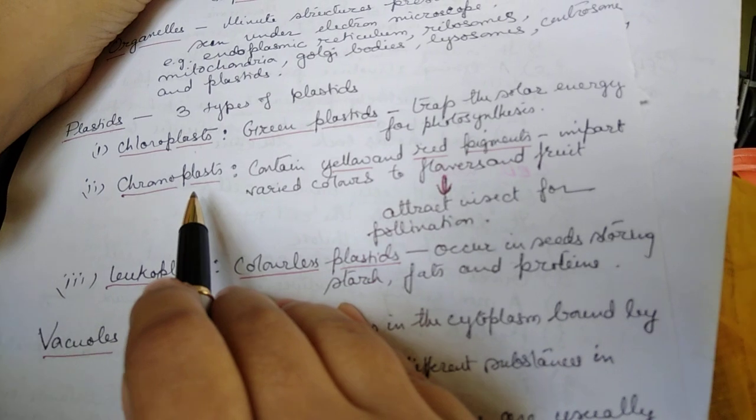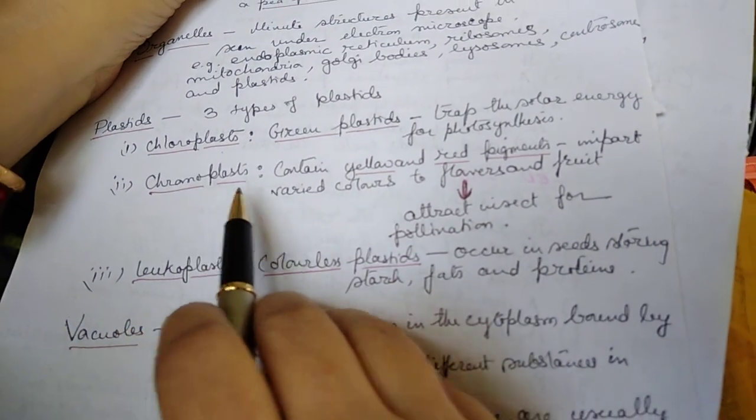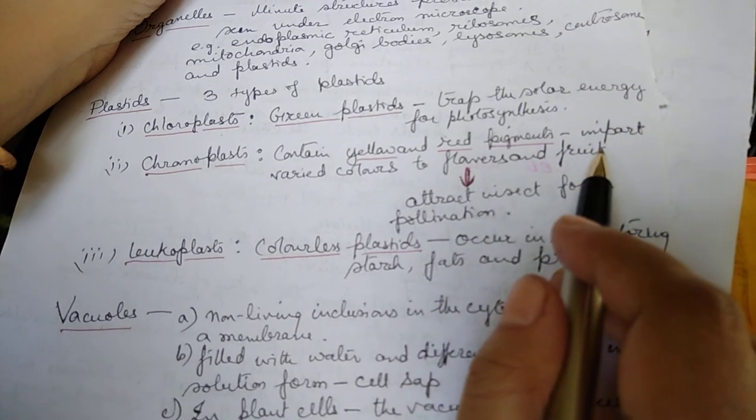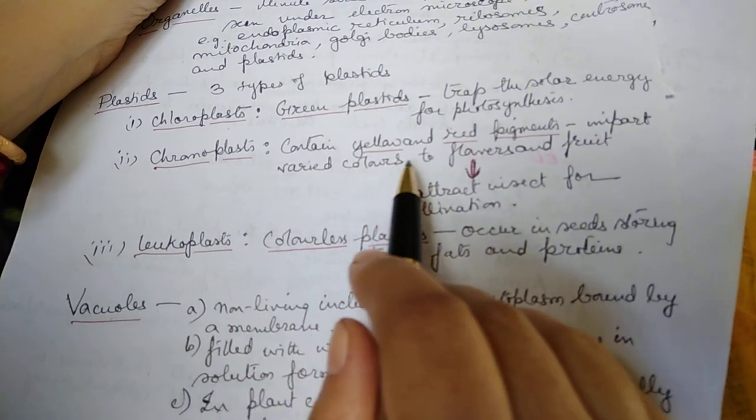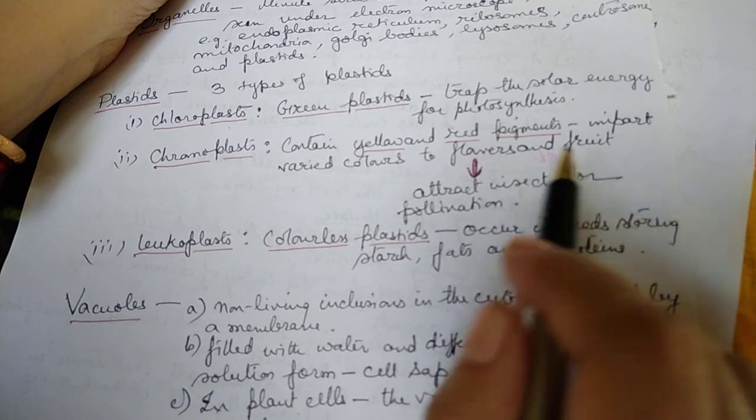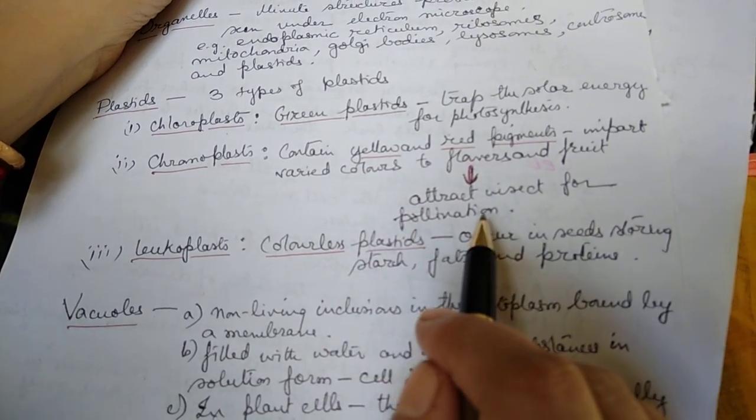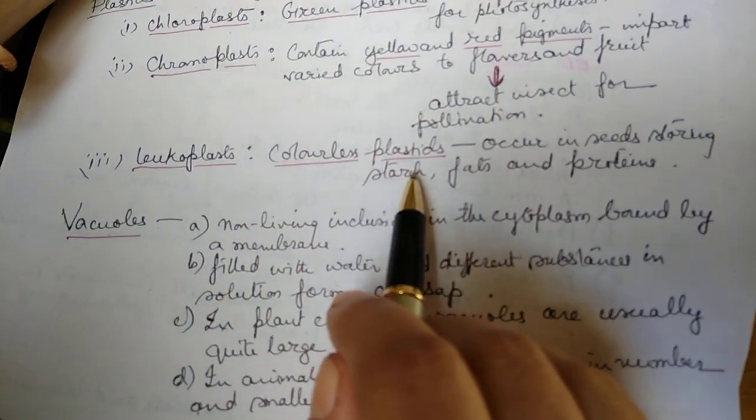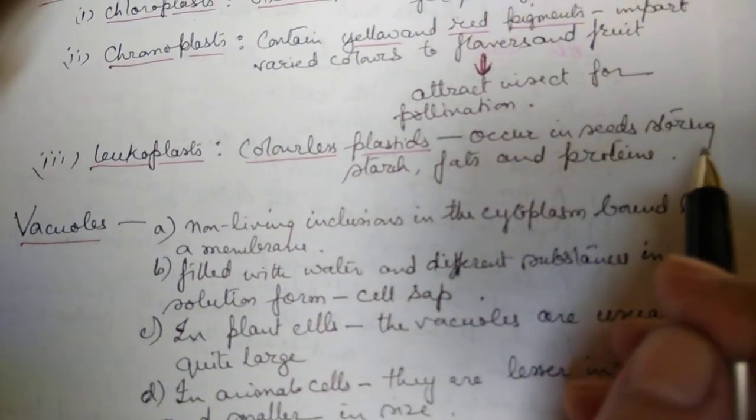Now chromoplast, they contain yellow and red pigments. They impart the varied colors to the flowers and the fruit for attracting insects for pollination.